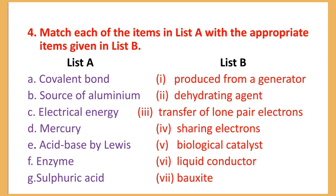Number 4 — Match each of the items in List A with the appropriate items given in List B. Number A: Covalent bond — List number 4: sharing electrons. A covalent bond is formed by sharing electrons.